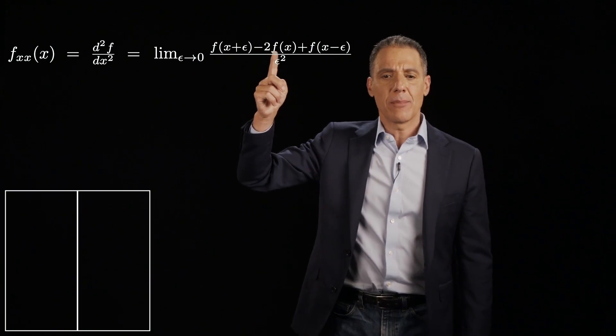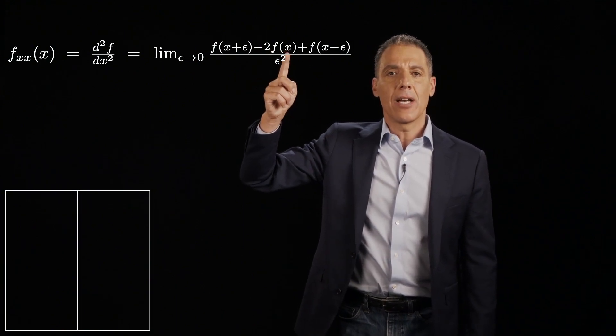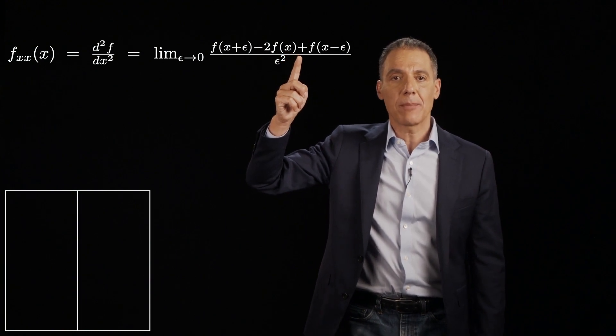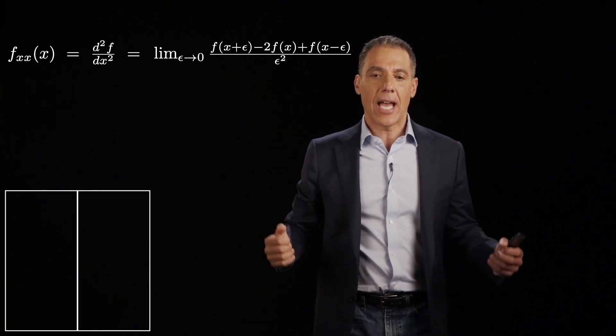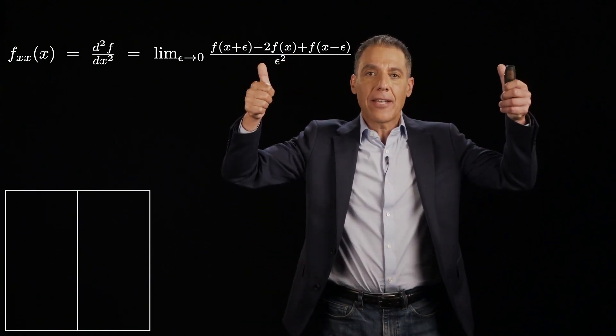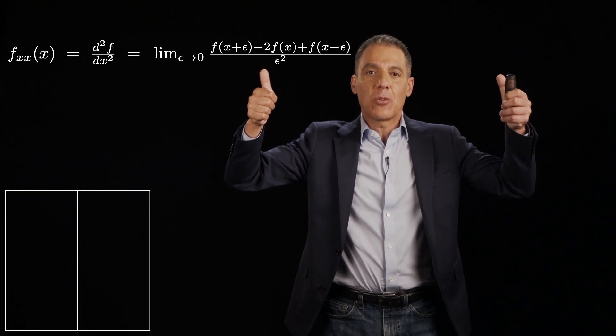So what am I doing here? I'm taking the value in the center at f(x). I'm multiplying it by 2. And then I'm looking at the value on either side of me and taking the difference between those.